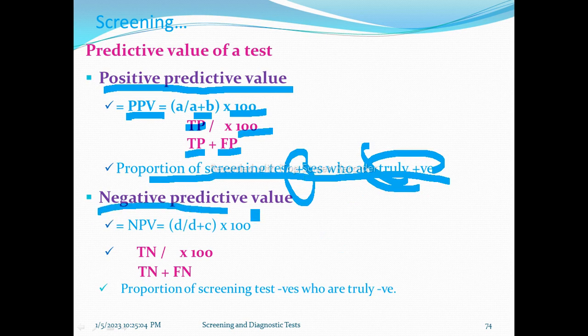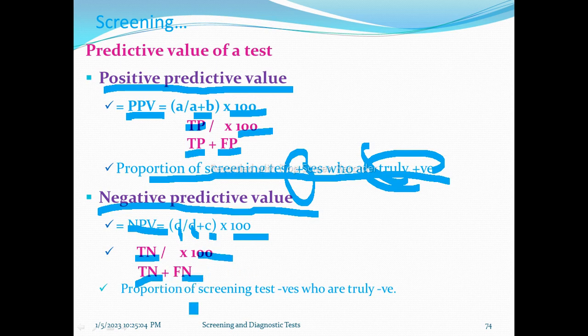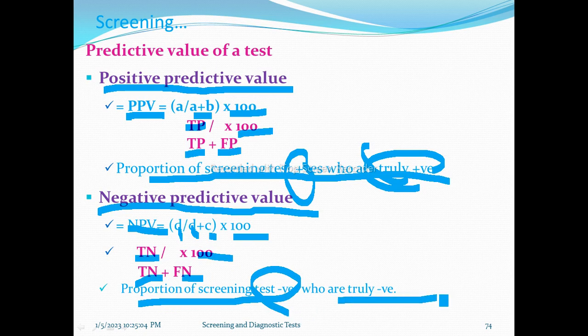Negative predictive value is equal to D over D plus C — true negative over true negative plus false positive. This is the proportion of screen test negatives who are truly negative.